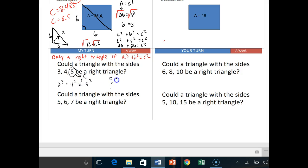So basically we're asking, is 9 plus 16 equal to 25? And in fact, yes, it is, because 9 plus 16 is 25. So 25 equals 25. So yes, this could be a right triangle.